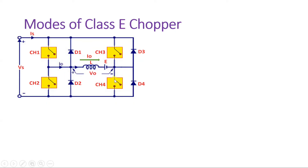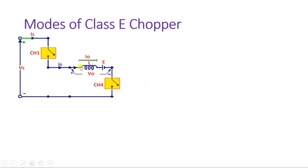In Mode 1, when Switch 1 and Switch 4 are turned on simultaneously, source current flows from VS through Switch 1, through the inductor, through E, and through Switch 4 in this loop. The inductor gets charged with the polarity shown — plus and minus. The direction of current is positive, and the output voltage has VS-plus here and VS-minus here, so output voltage is also positive. Therefore this mode functions in the first quadrant.